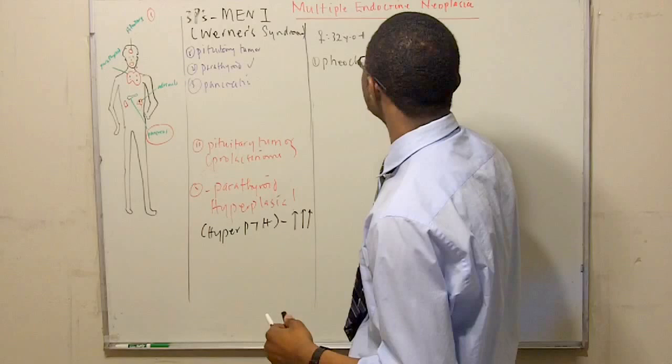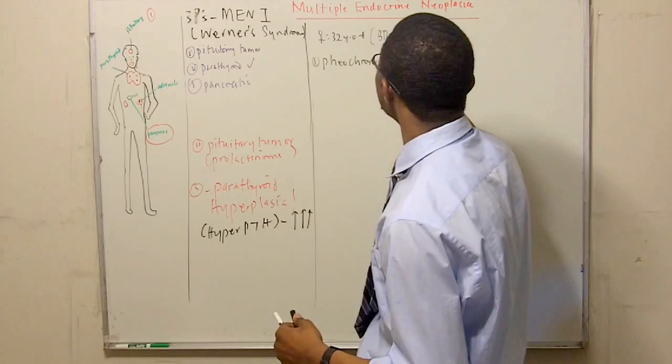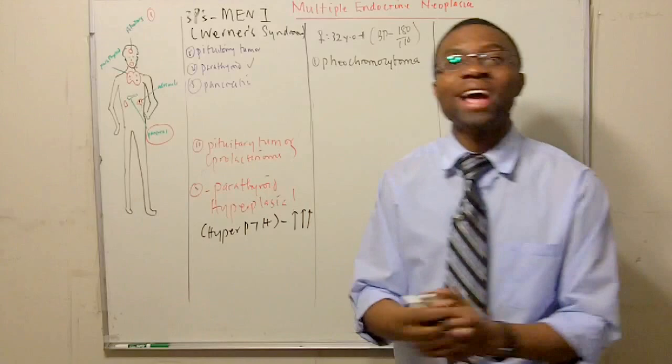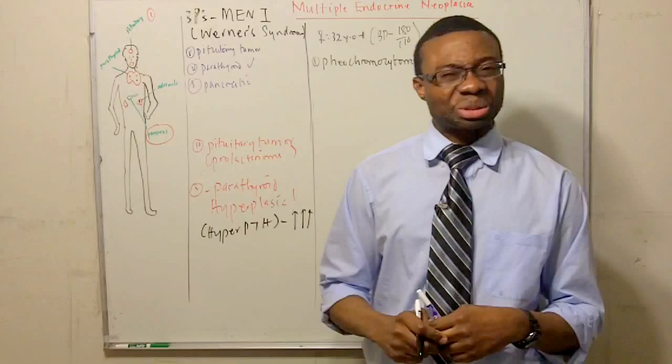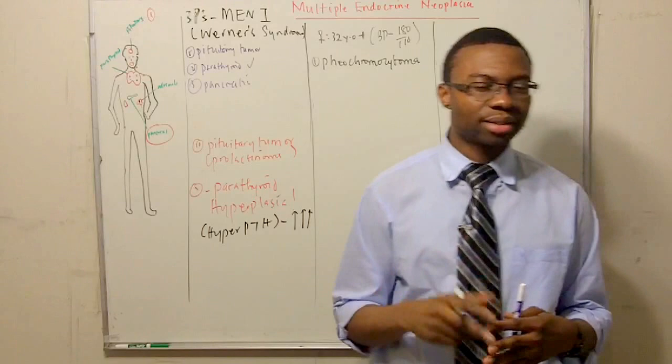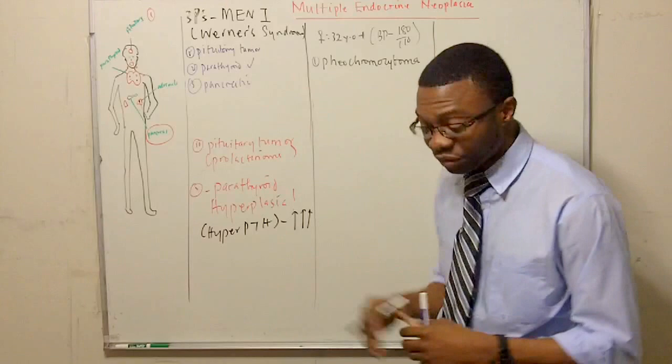That's why our blood pressure is always 180 over 110. They can get a calcium channel blocker. They give thiazides. They give, you know, beta blockers. Well, not really the best treatment. They should give a phenoxybenzamine. It's an alpha-1 blocker. Well, now that we found out she had pheochromocytoma, we thought that was the end of the world.